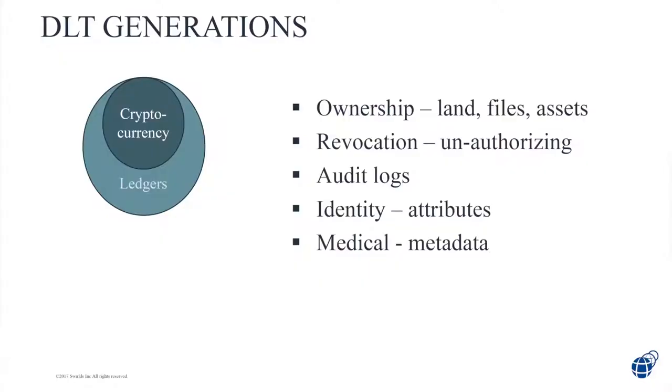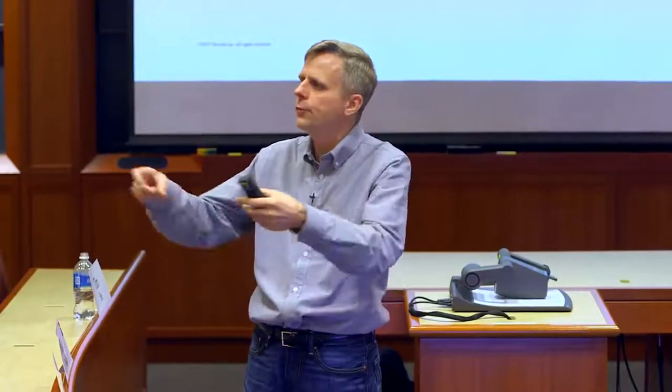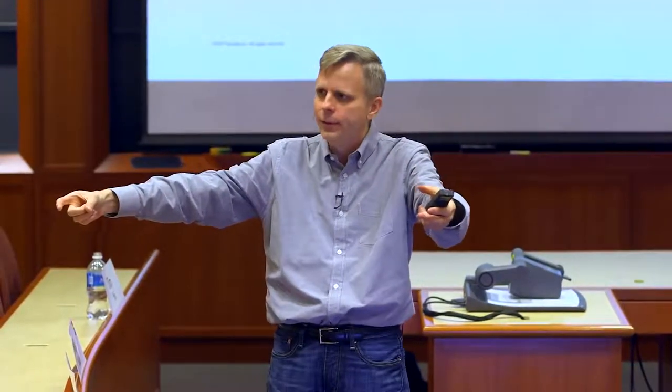You could store ownership of something like land. Why put a deed or hash of a deed into a ledger? Because if I try to sell my property to two different people, I could hand them each a copy of the deed. But when you try to buy it, you want to make sure no one else has it — you want to check who owns it. With a ledger, you just look in it and you're guaranteed to see the same thing everyone else sees. The whole world is seeing who owns this land right now.